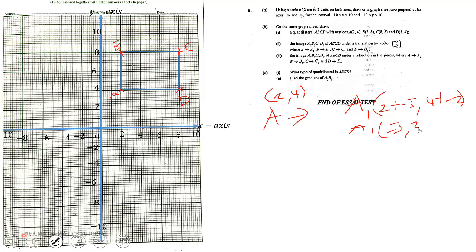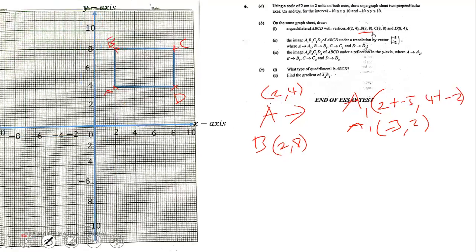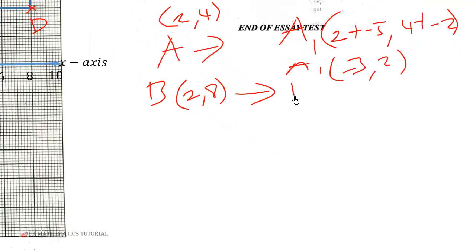Then B, which has coordinates (2,8), will map onto B1, which is 2 plus negative 5, then 8 plus negative 2. So now we have (-3,6).